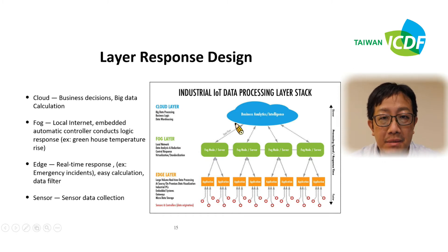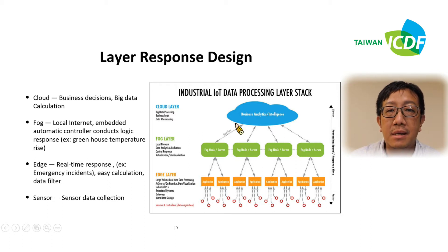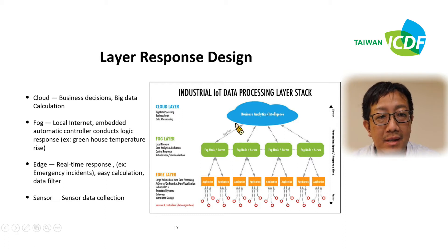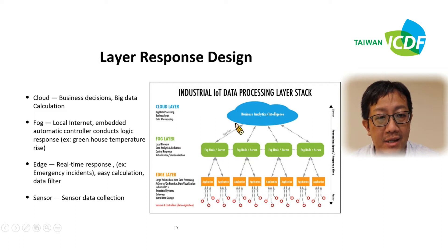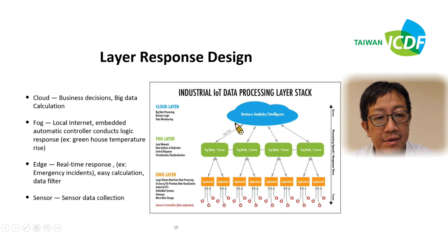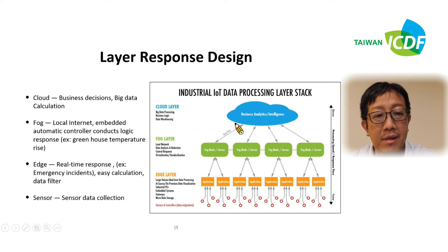Now we can see some layered response design. It's actually the IoT structure. You can see the illustration on the right side. We have the cloud layer, the fog layer, the edge, and the sensors. The cloud is for business decisions and big data calculation. The fog layer contains local internet-embedded automatic controllers that conduct logic responses. The edge does real-time response, simple calculations, and data filtering. The sensor is on the basic ground and does data collection.